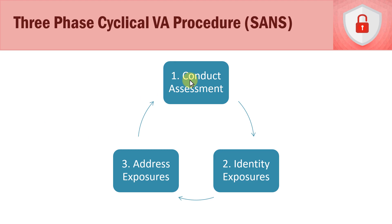Systems are always evolving and changing — there are always patches and updates, hardware is changing, software is changing, operating systems are changing, the way we protect our systems is changing, our network architecture changes, and our overall risk posture in terms of how much risk we're willing to accept changes as well. So we don't want to do a vulnerability assessment just one time and never do it again — we want to do it on a regular basis. That's a simple three-phase cyclical vulnerability assessment process from SANS.